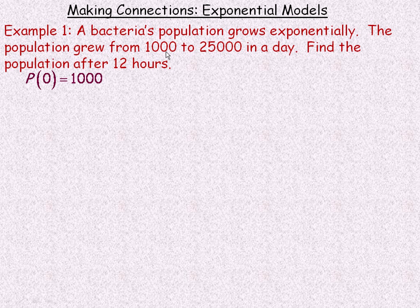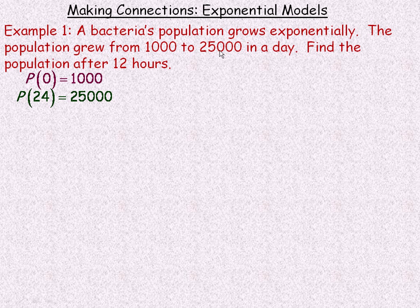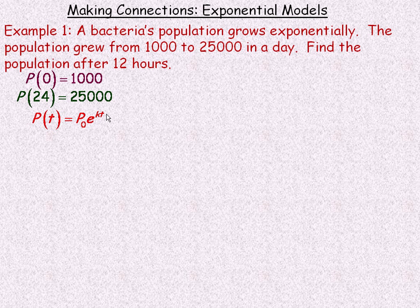We're starting with 1,000, so the population at time 0 is 1,000, and the population after 24 hours is 25,000 — so we'll work in hours, not days. Because the population grows exponentially, our model is P(t) = p₀ · e^(kt). We need to find what p₀ is and solve for the growth constant k.